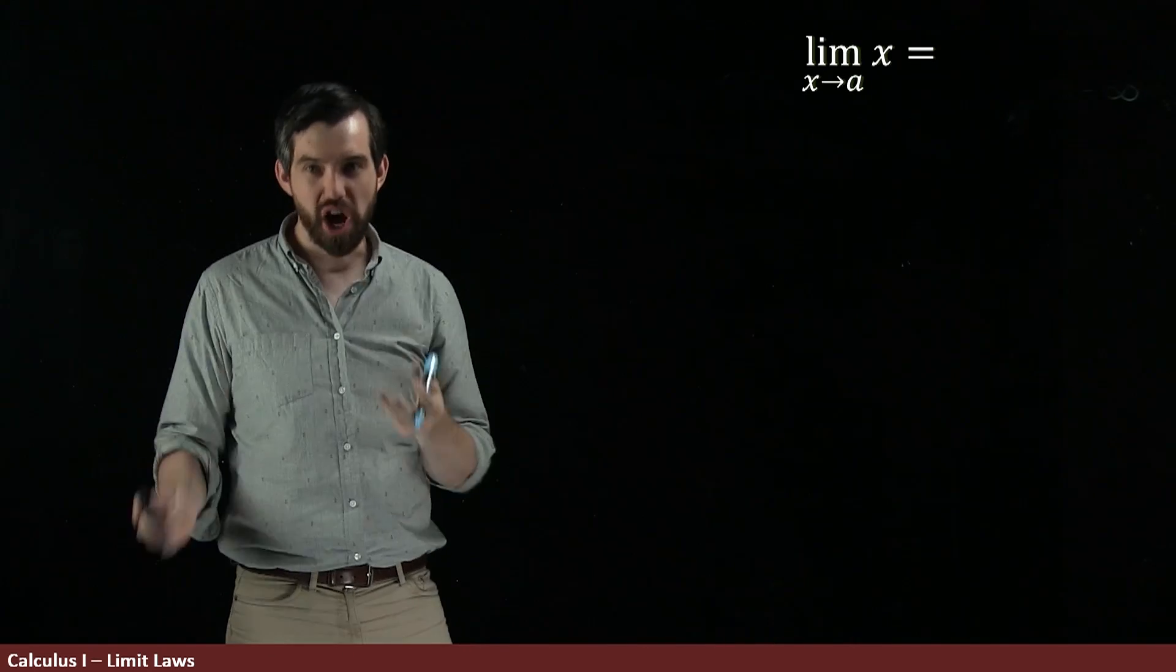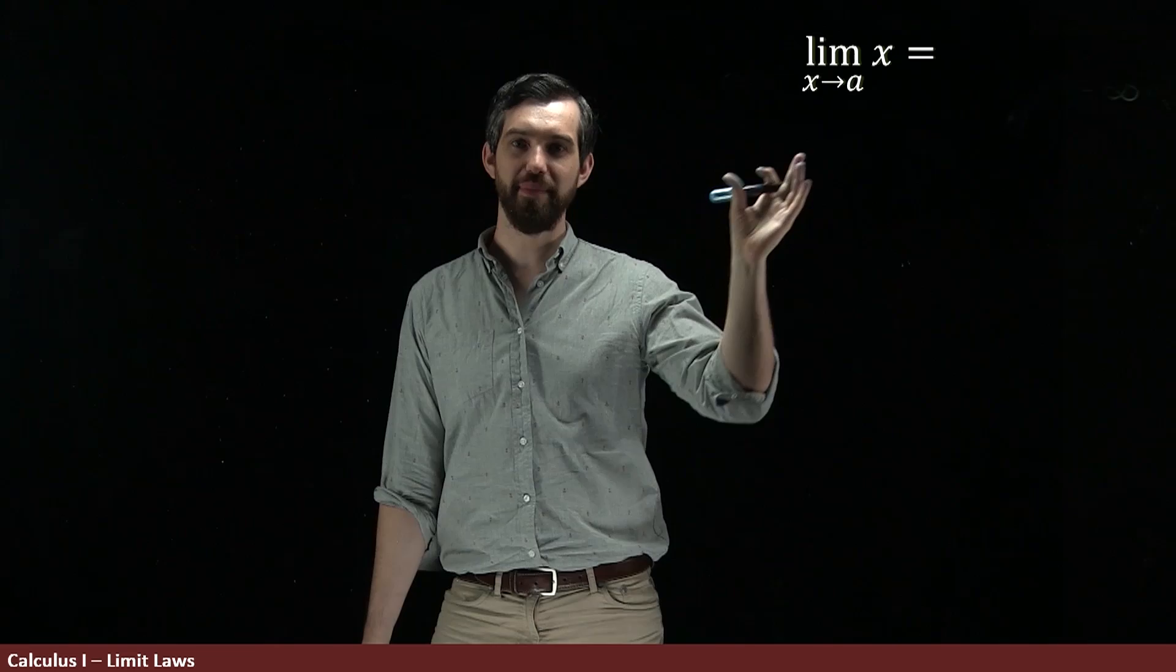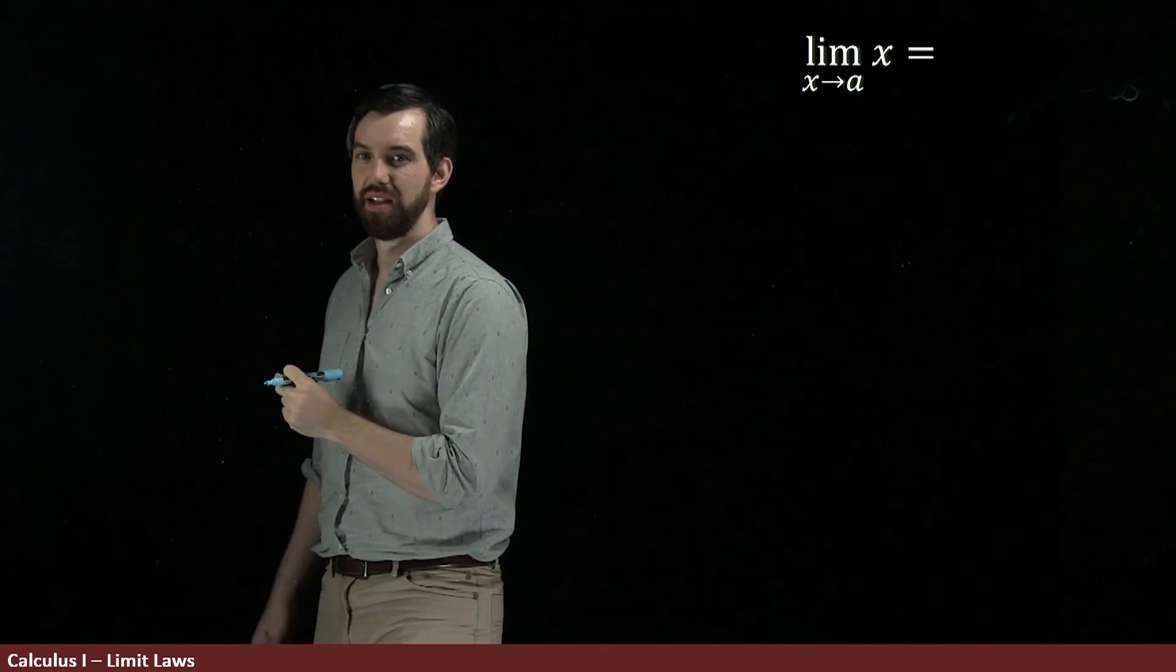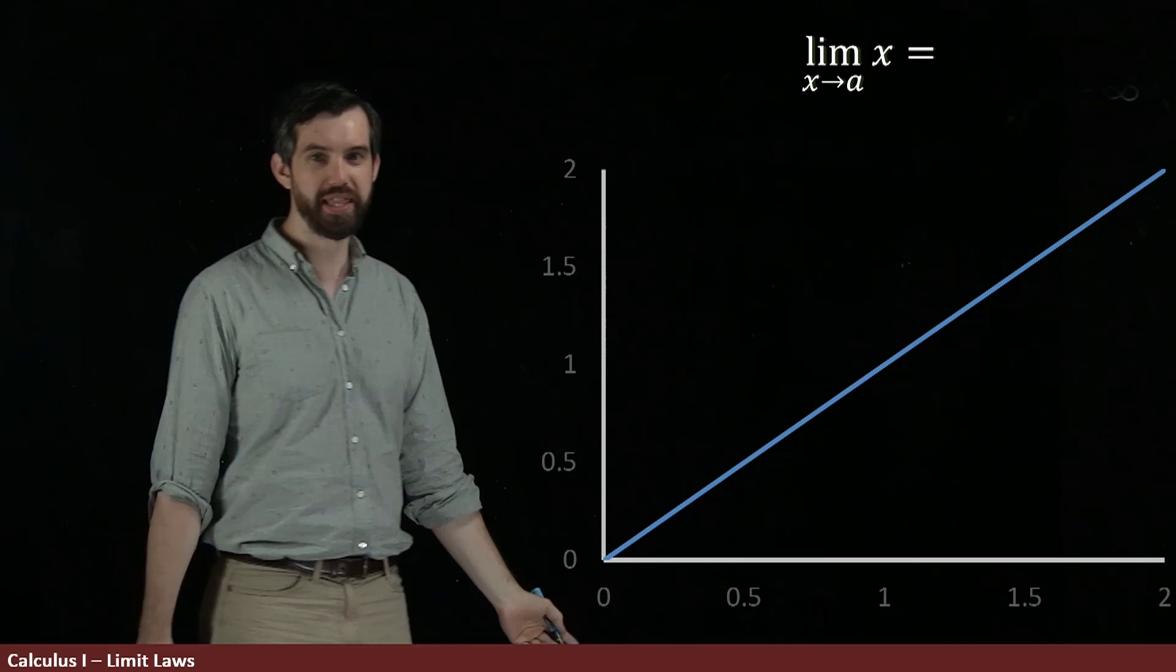Okay, here's sort of the next most complicated function. Not a constant this time, it's the variable x. So, this is the graph of a straight line. It looks a little bit like this.